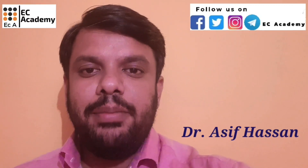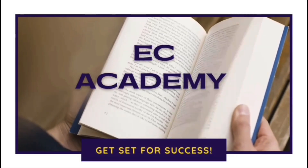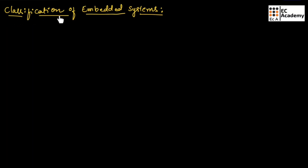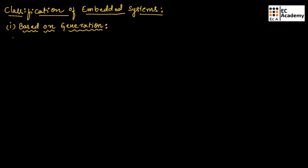Hello friends, welcome to ESA Academy. In this lecture, let us understand classification of embedded systems. The embedded systems can be classified based on different criterias. The first one is based on generations. This classification is based on how embedded processing systems evolved from first version to where they are today, which means from first generation to the latest generations.